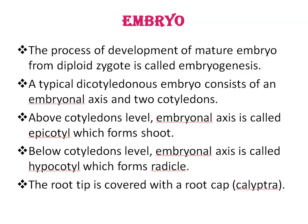The embryo cell undergoes two vertical divisions and one transverse division to form quadrant and then octant stages. A typical dicotyledonous embryo consists of an embryonal axis and two cotyledons. Above the cotyledon level, the embryonal axis is called the epicotyl, which forms the shoot, and below the cotyledon level, it is called the hypocotyl, which forms the radicle. The root tip is covered with a root cap, also known as calyptra.